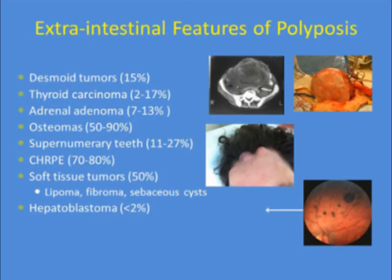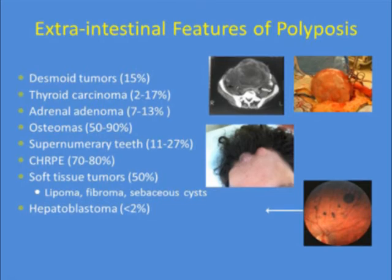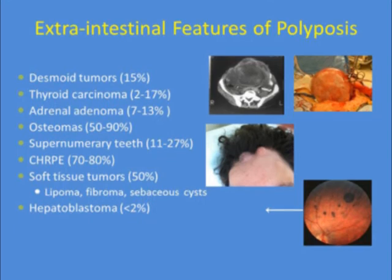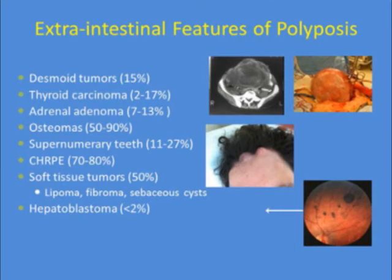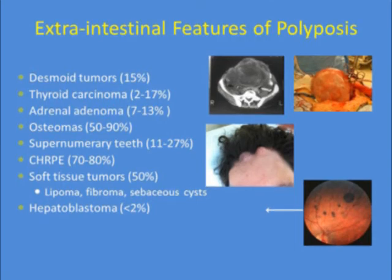Extraintestinal features of polyposis might be the presenting feature. Desmoid tumors — fibrous tumors that grow within the abdomen — occur in about 15% of FAP patients. Thyroid carcinoma occurs in up to 15%, and adrenal adenomas are often found on imaging. Gardner's variant of FAP includes congenital hypertrophy of the retinal pigmented epithelium — bilateral, multifocal freckles seen in up to 80% — supernumerary teeth, osteomas in the mandible, maxilla, or skull, and soft tissue tumors including lipomas, fibromas, and sebaceous cysts.